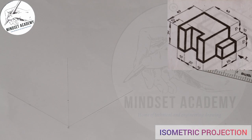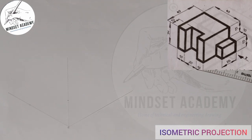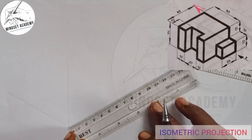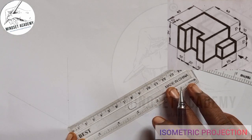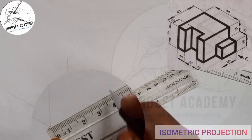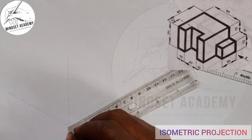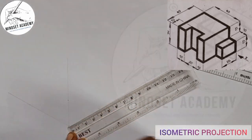The next thing is to measure the entire length, which is given as 40 — from this point to this point. So I measure 40 on that axis. That is 40.